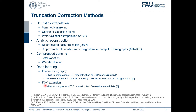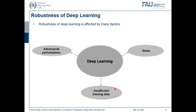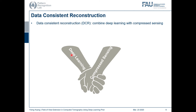The focus of this work is FOV extension. For FOV extension, our colleagues have proposed to apply the U-Net to post-process FBP reconstruction from extrapolated data, and have already achieved promising results. However, the robustness of deep learning is affected by many factors, for example noise, insufficient training data, or adversarial perturbations. Because of these factors, incorrect structures might occur in the deep learning reconstruction, and such reconstruction might not be consistent with measured data. Therefore, here we propose a data consistent reconstruction method to improve deep learning reconstruction with the help of compressed sensing.